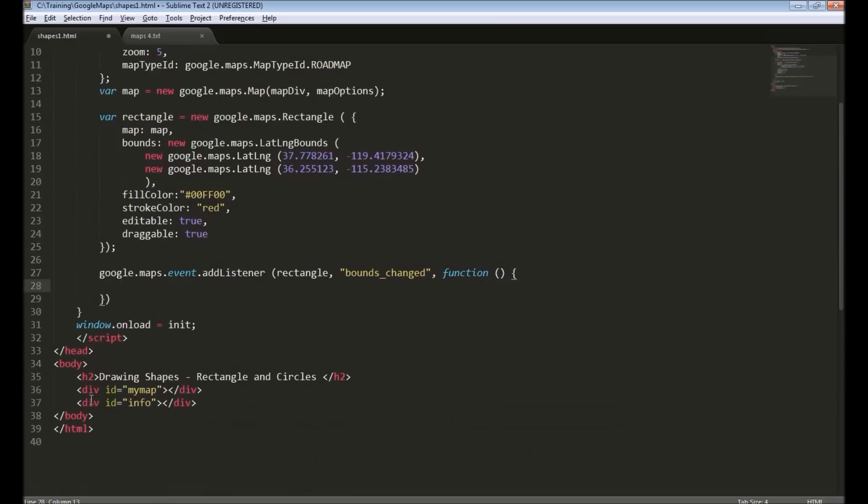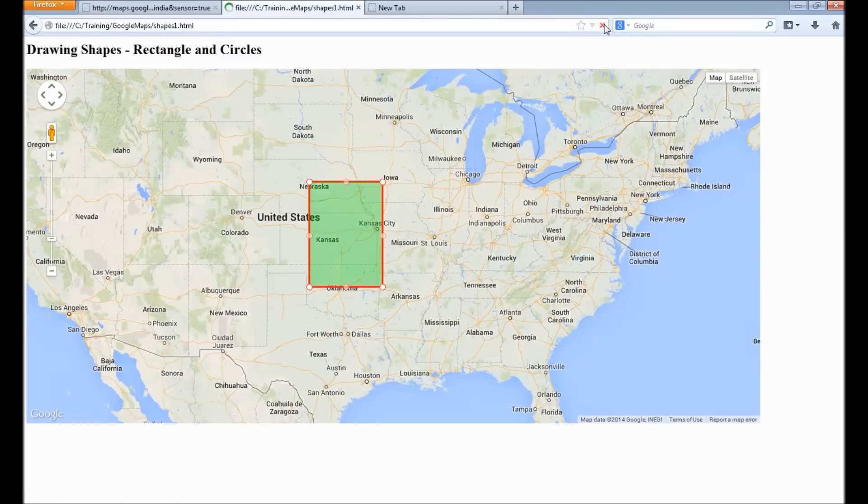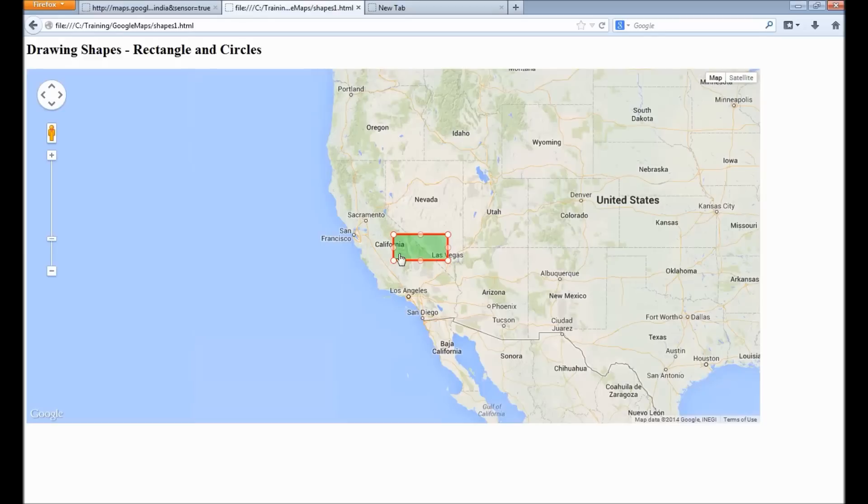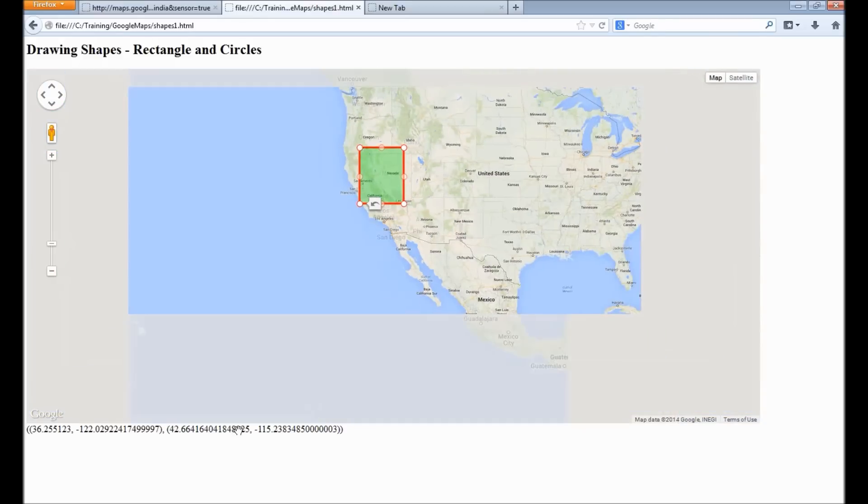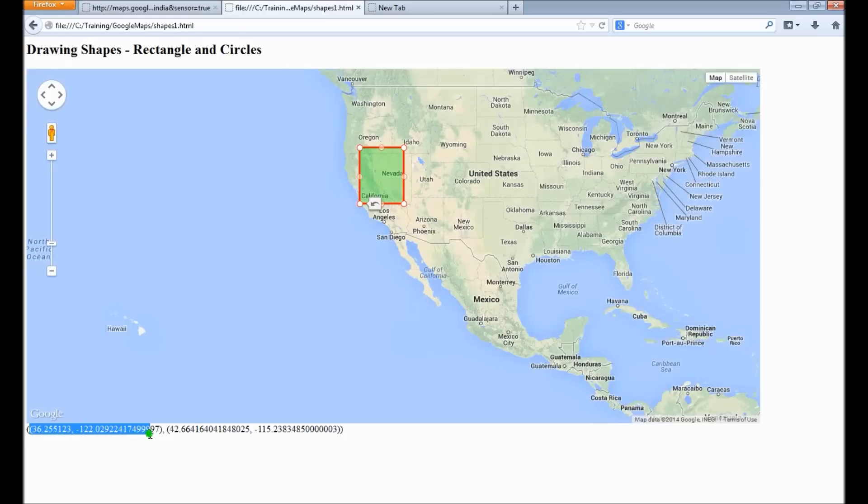I have a div called info, I will display the new bounds information inside this div. Event ID Info.innerHTML equals to rectangle.getBounds. I will refresh the page. So when I resize the rectangle, you can see this information displayed here - two coordinates, that is bounds, the northeast and the southwest bounds. This gets triggered even when we move this rectangle around.